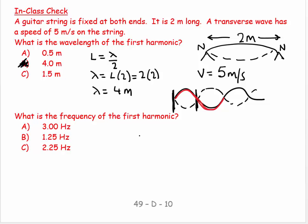Well, we know that v is equal to f lambda, so we know that in this case, 5 is equal to f times 4, so f is equal to 5 over 4...